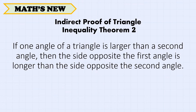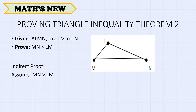Moving on to the indirect proof of Triangle Inequality Theorem 2, which states that if one angle of a triangle is larger than a second angle, then the side opposite the first angle is longer than the side opposite the second angle. Given triangle LMN where the measure of angle L is greater than the measure of angle N, we will prove that MN is greater than LM.